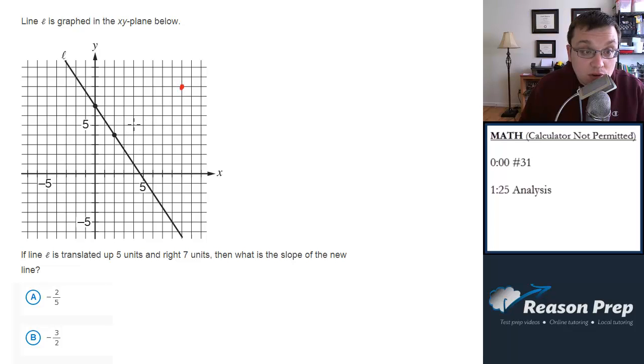1, 2, 3, 4, 5... here would be another point, and we can connect these to get a line that would look something like that. We want to know what is the slope of the new line.